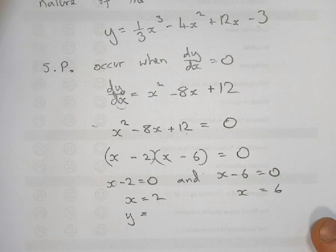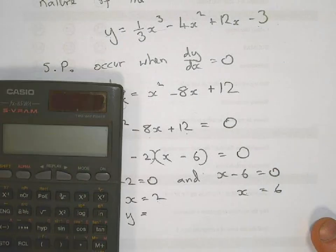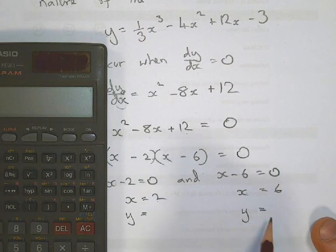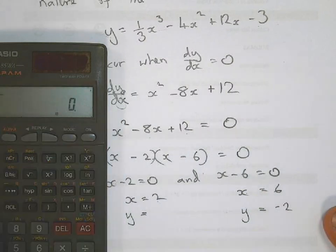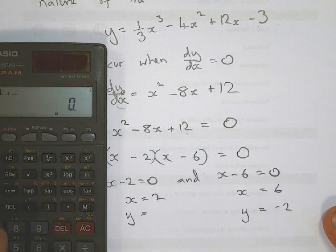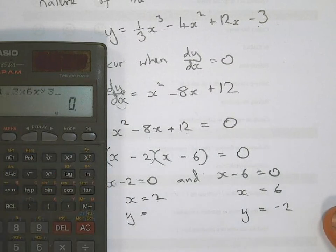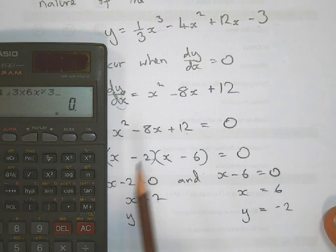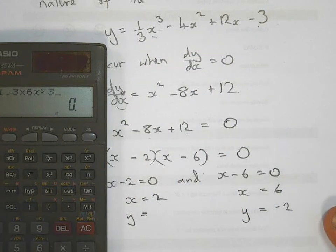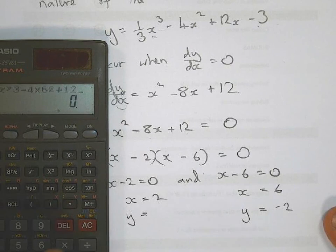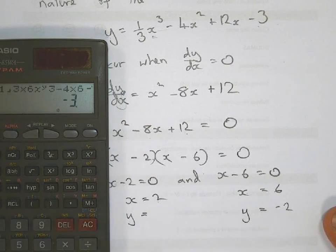So anyone want to do that for me quickly? The first one is y equals... Why? This one here? So x is 6, so I could do that for you. That's minus 2 there. Okay, so just to show you what you do there, you can put in a third times 6 cubed, take away 4 times 6 squared, plus 12 times 6, minus 3.